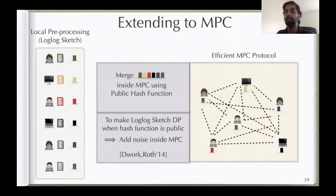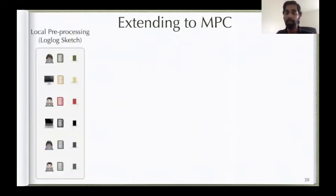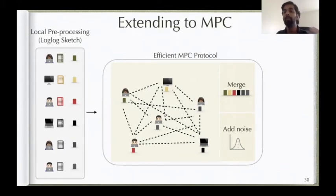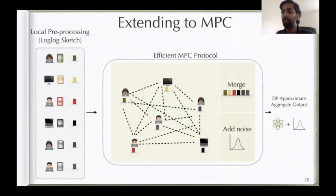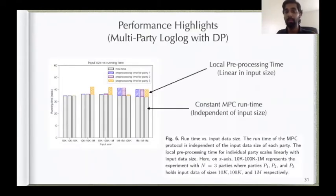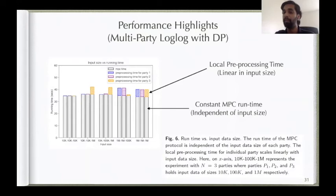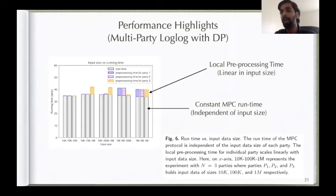The complete protocol has parties do local preprocessing to compute their sketches, merge them together inside MPC, add noise in a distributed way, and output a differentially private approximation of the aggregate result. Looking at the actual experimental results, the MPC runtime remains constant regardless of input size because the MPC input is just the sketch, whose size doesn't change. The local preprocessing time grows linearly in input size, since you need to hash every item in the dataset.